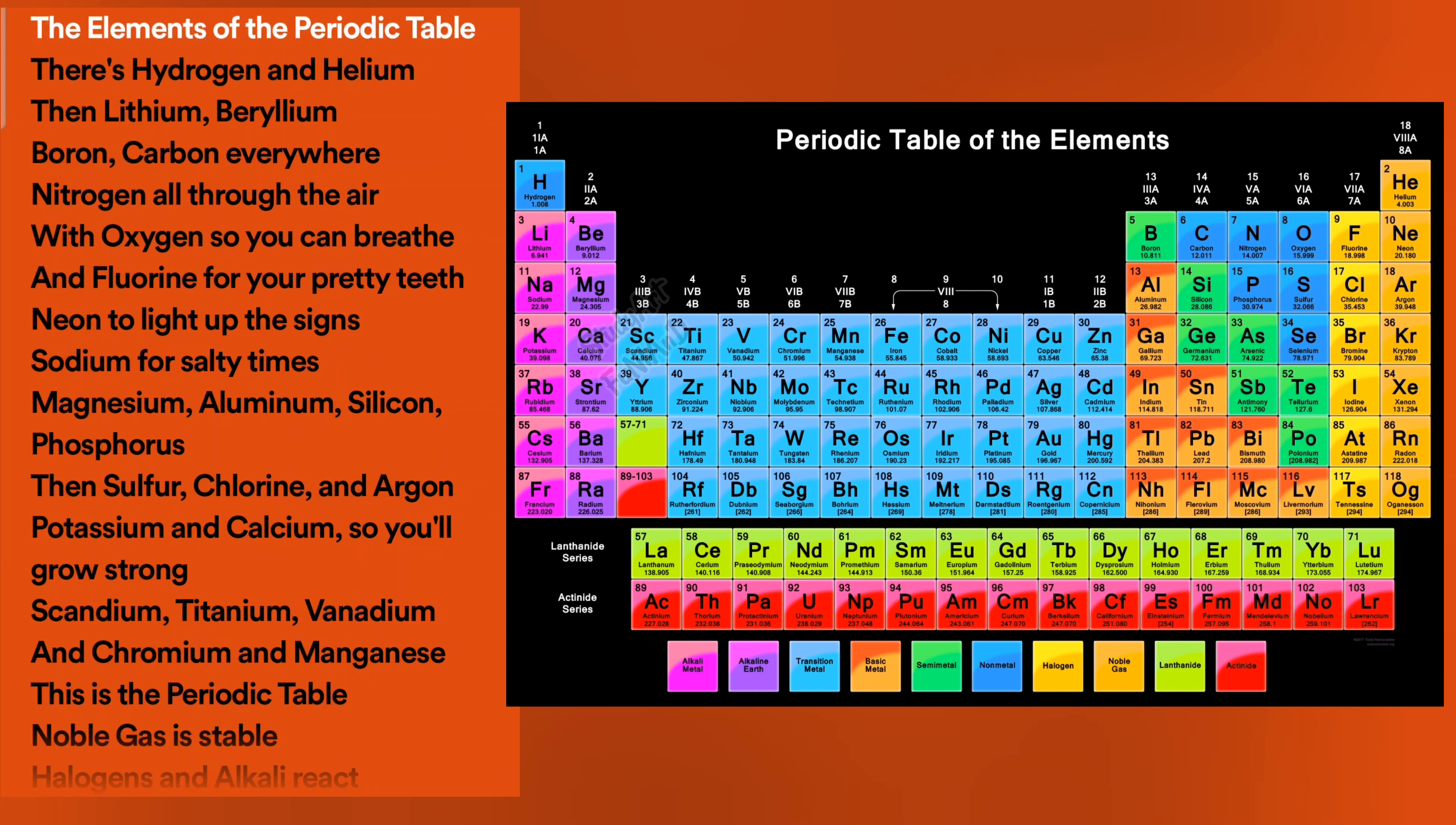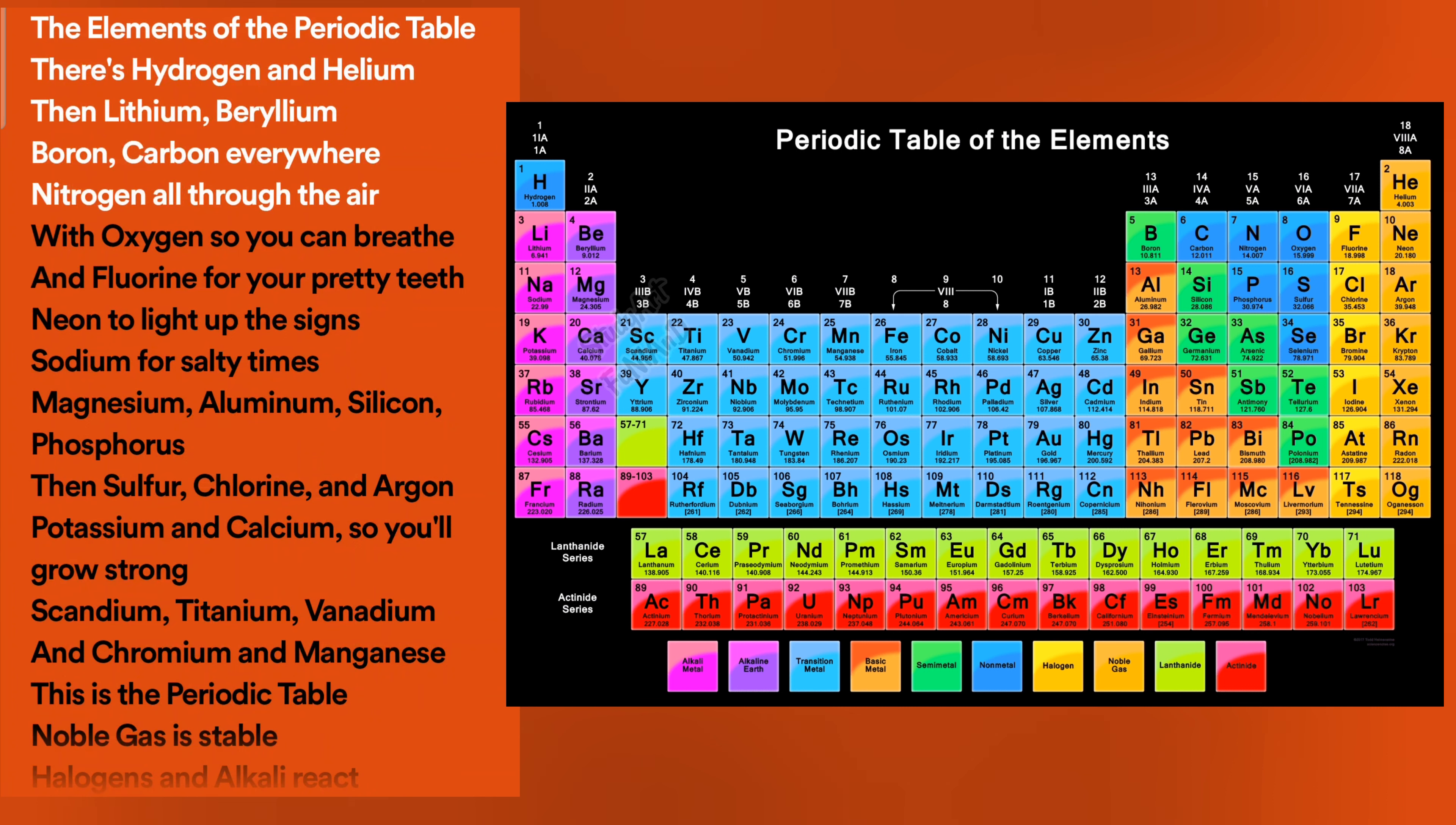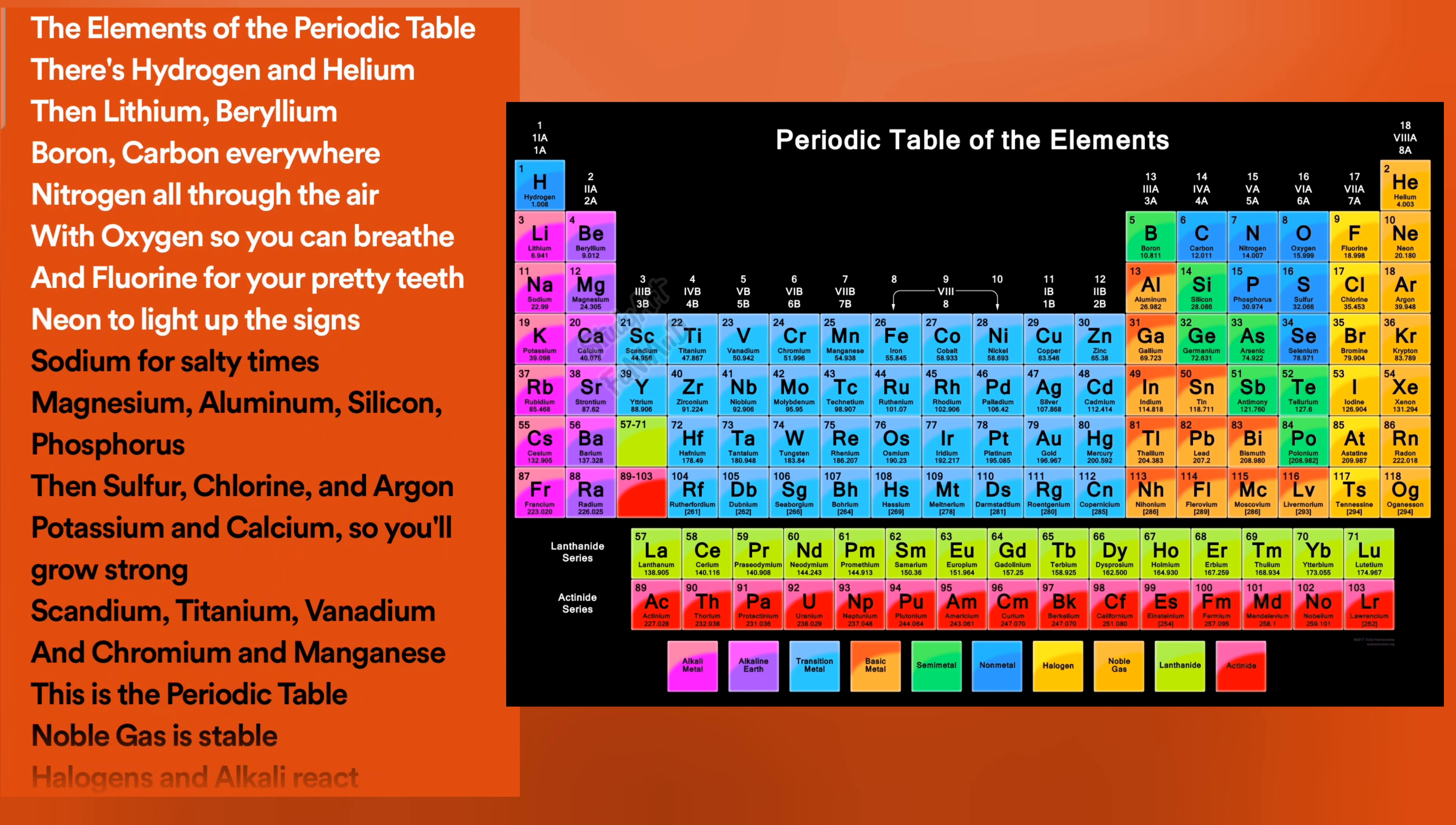The Elements of the Periodic Table. There's hydrogen and helium, then lithium, beryllium, boron, carbon everywhere, nitrogen all through the air, with oxygen so you can breathe, and fluorine for your pretty teeth, neon to light